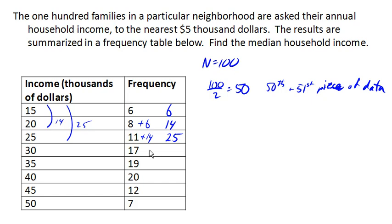And then if we add in another 17, that's going to get us up to 42. And so all together this is 42 pieces of data. And then add that to 19, and that gets us up to 61. And so all together this is 61 pieces of data.